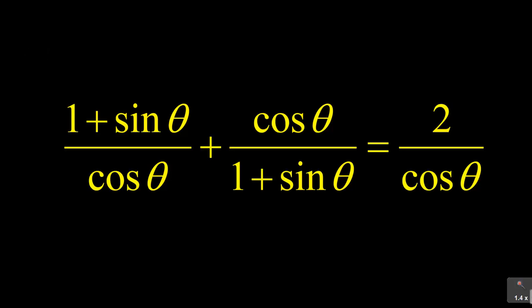For example, this side is called the left-hand side, and after the equal sign it is the right-hand side. You can choose which side you want to start with. If you're going to start with the left-hand side, you must indicate that, and then your aim is to prove that the left-hand side simplifies to become the right-hand side.